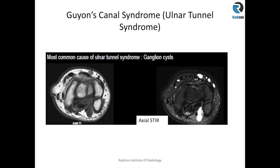Axial T1 and fat-sat or STIR sequences are quite adequate to evaluate this area. On the axial T1, you can see a fluid-filled or intermediate signal intensity structure. The ulnar nerve is here, close to the pisiform, and that's the ulnar artery. On the STIR, you can see this fluid-filled structure pushing the ulnar nerve away towards the pisiform, with the ulnar artery just beside it — this can easily cause ulnar nerve compression and symptoms.